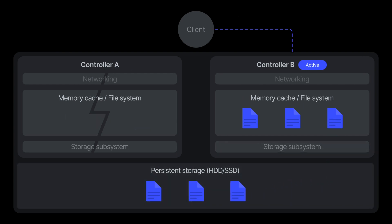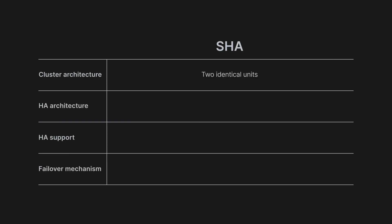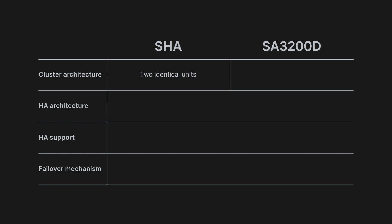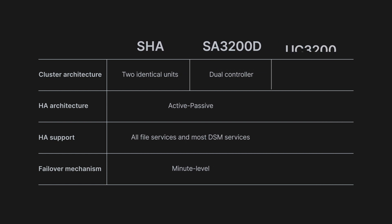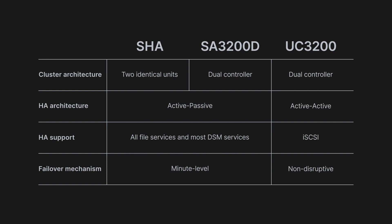As a recap, let's take a quick look at the solutions available to maximize service availability. The majority of our existing storage solutions support SHA by adding another identical unit. The SA3200D is a special dual-controller model with shared storage architecture. Both support high availability in an active-passive configuration for all file services and most DSM services. SHA has minute-level failover, and we made that 30% faster in DSM 7. For iSCSI-only deployments, our dual-active UC3200 features completely non-disruptive failover.